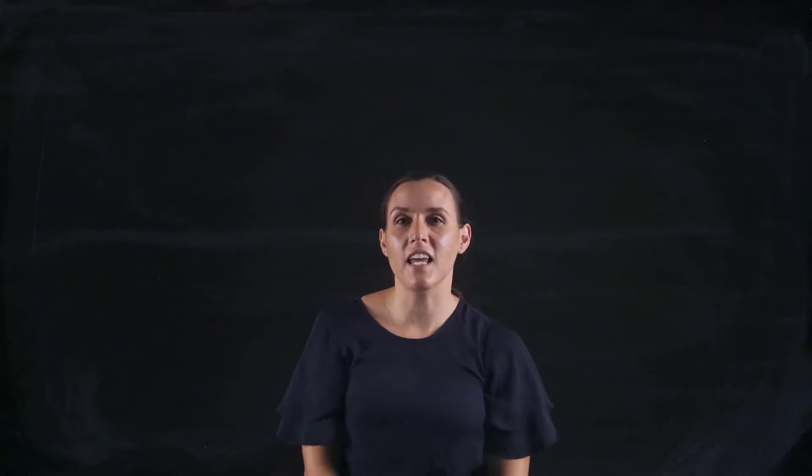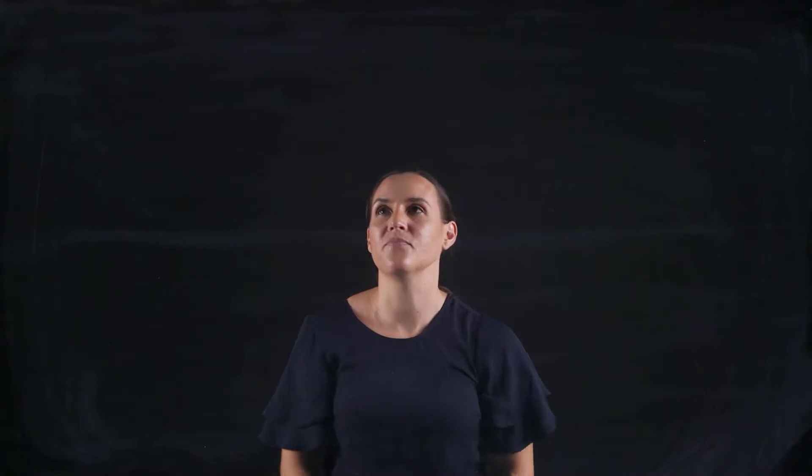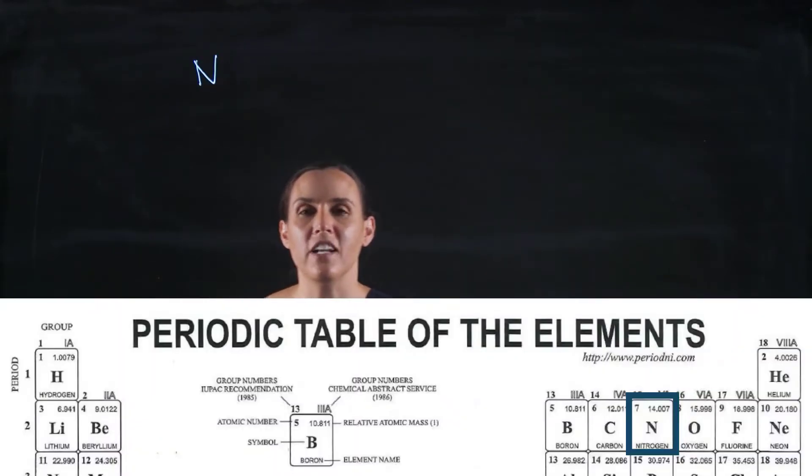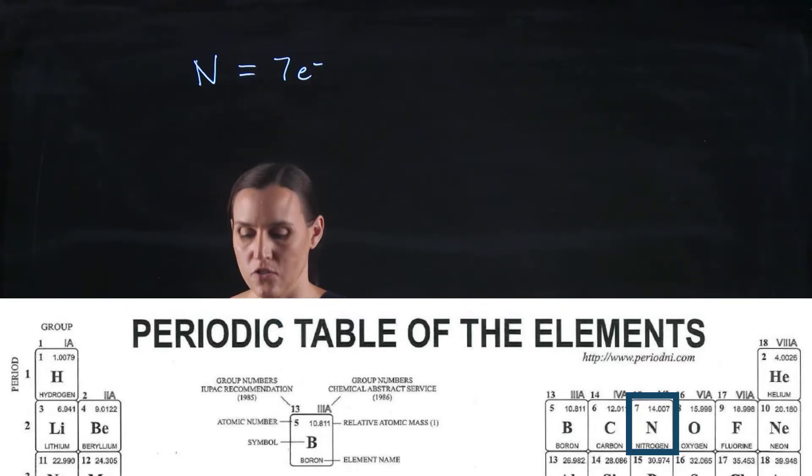Hi, so in this video we're going to assign each of the quantum numbers for all the electrons that are in the nitrogen atom. So nitrogen is N on your periodic table and there are seven electrons in total.